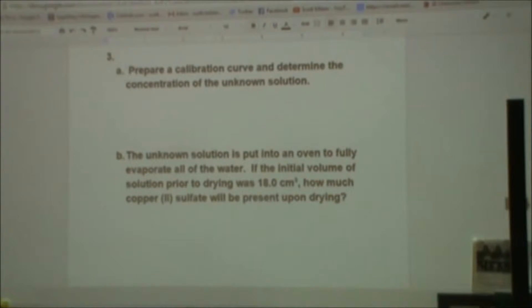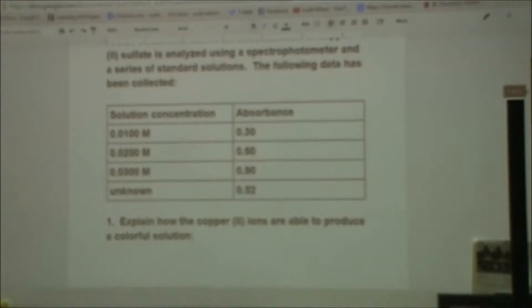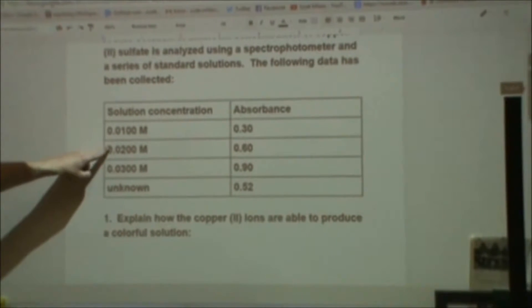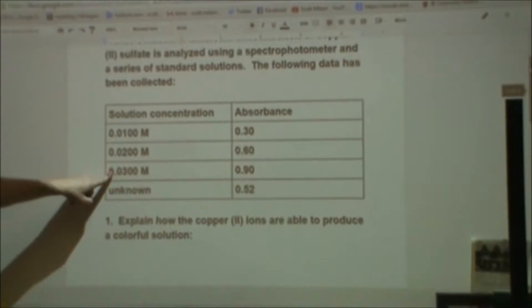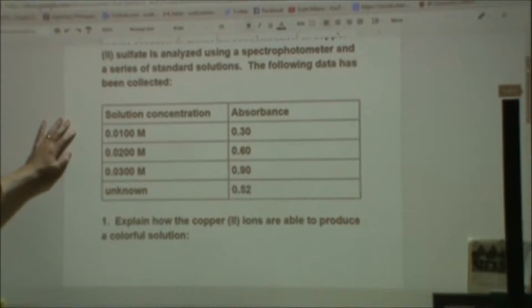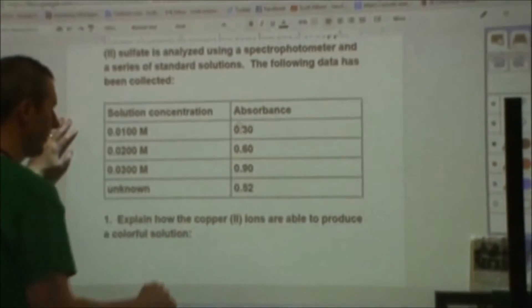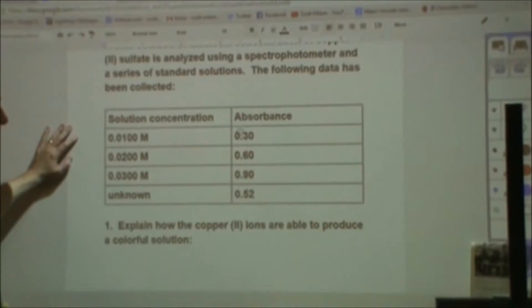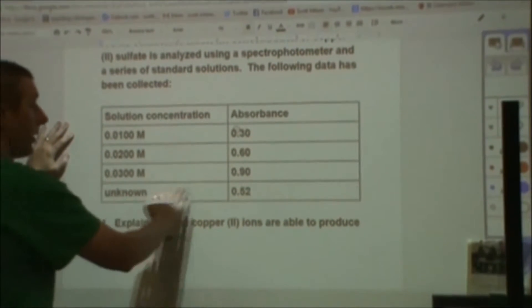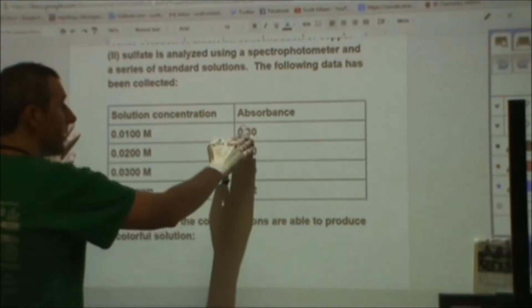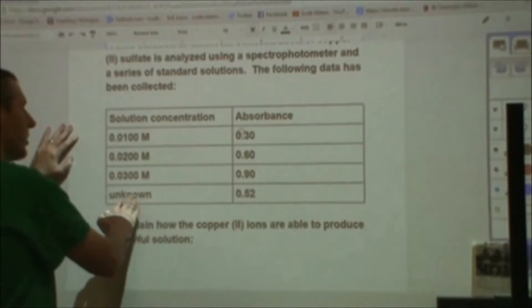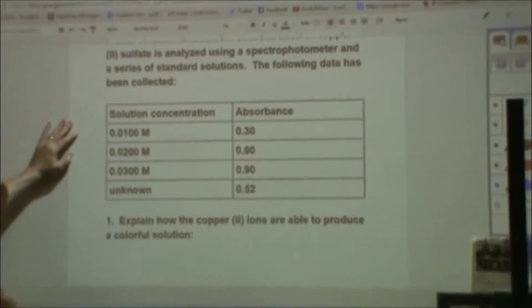Next, it says make a calibration curve, determine the unknown concentration. That's looking at this data here. We're looking at these three concentrations of our standards, and we're looking at how much light they absorb at a particular wavelength. It doesn't say what that wavelength is, so it doesn't clue away at number two. And then our unknown has an absorbance that falls in the midst of those three values. So the question then is, what is the concentration of that? To figure that out, we're going to plot the calibration curve.